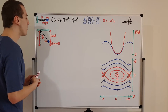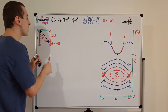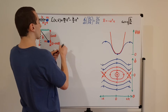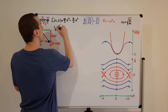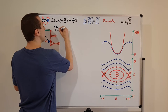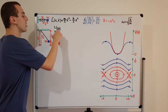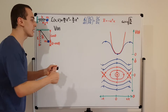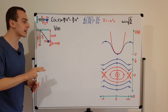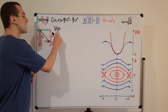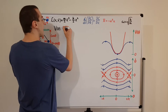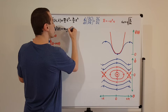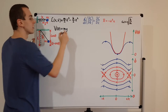Let's write down the potential energy function V, which depends on theta. In reality the potential energy is determined by the height — that is the y-coordinate — but we express it in terms of the angle theta. We have the weight force mg, the gravitational acceleration, multiplied by the length L of the string, multiplied by one minus cosine of theta.